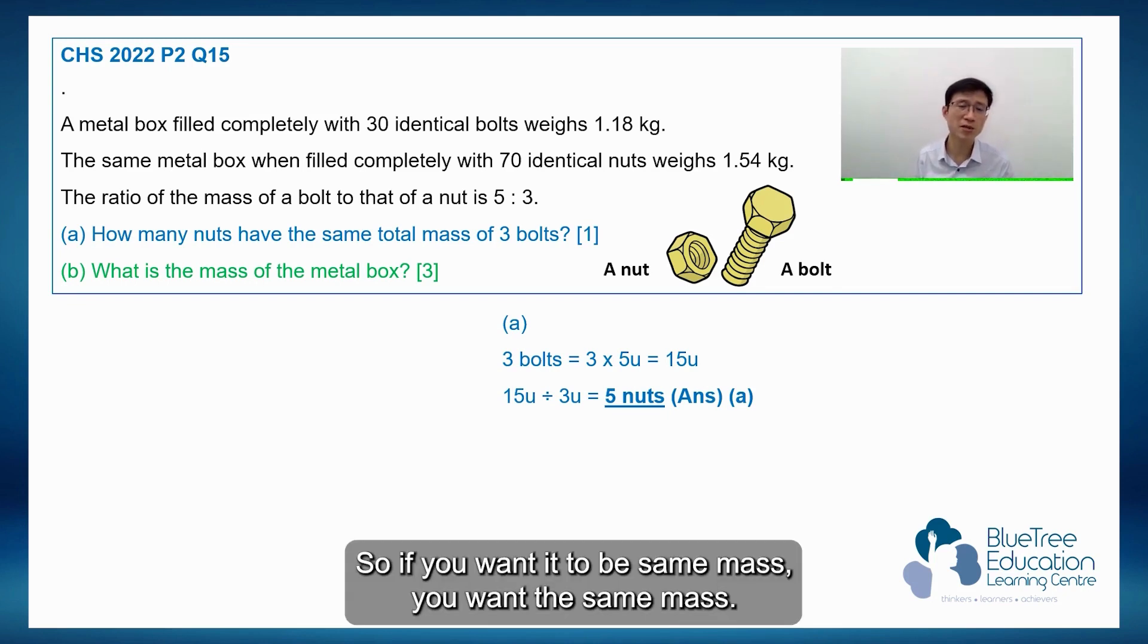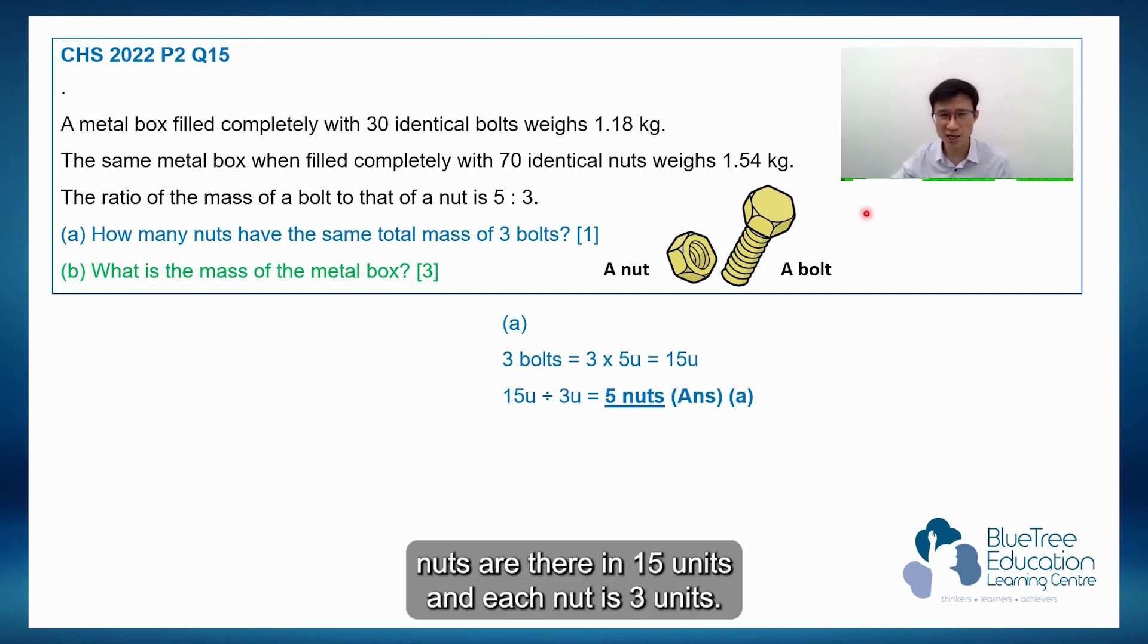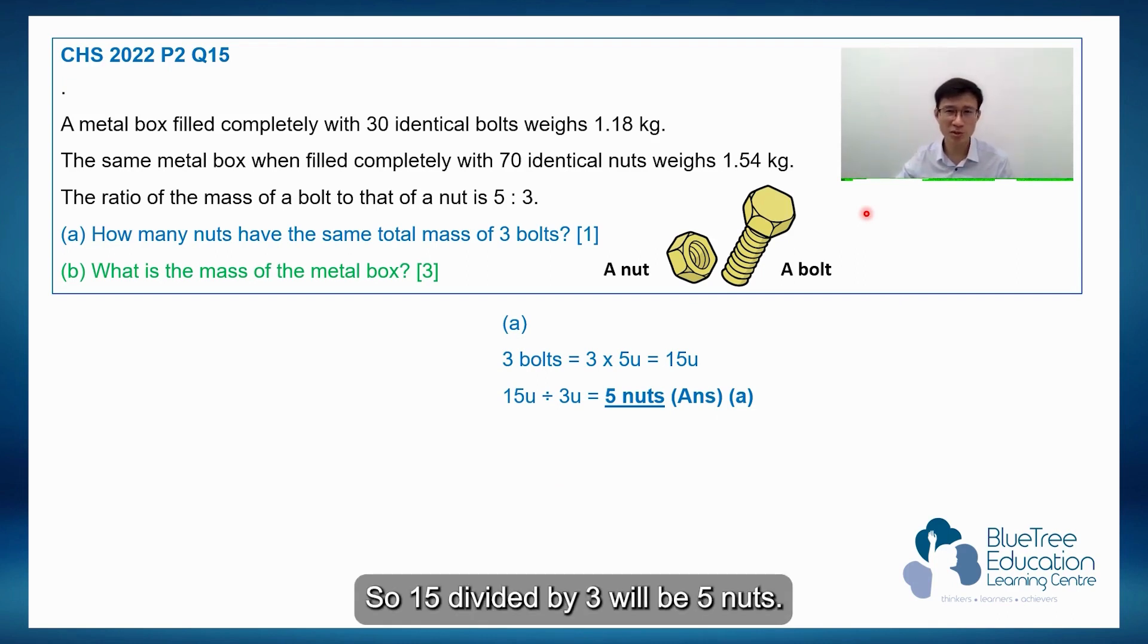And so this 15 units divided by 3 units is 5 nuts. So if you want it to be the same mass, this same mass of 15 units. So 5 nuts have the same mass as 3 bolts, which is 15 units.